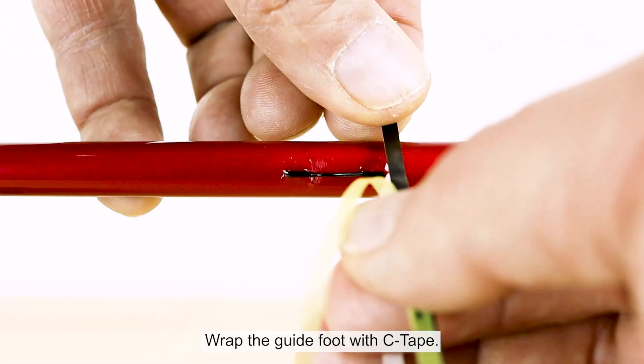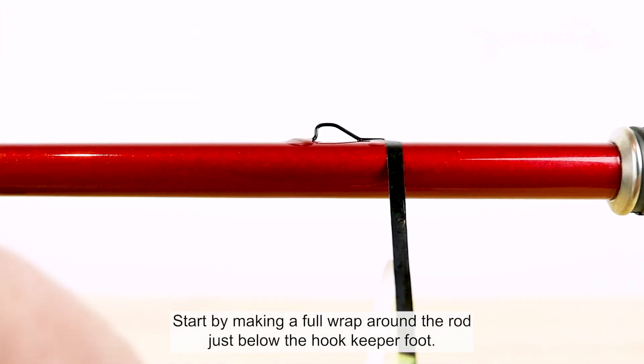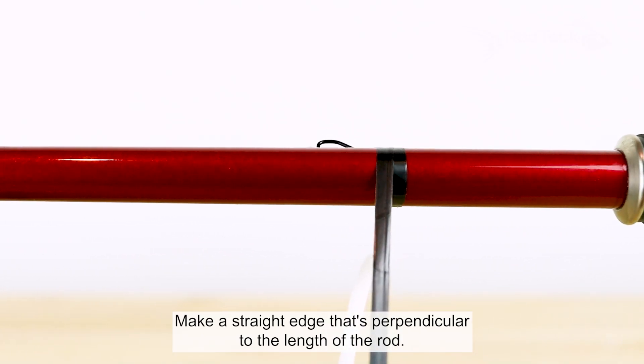Wrap the guide foot with sea tape. Start by making a full wrap around the rod, just below the hook keeper foot. Make a straight edge that's perpendicular to the length of the rod.